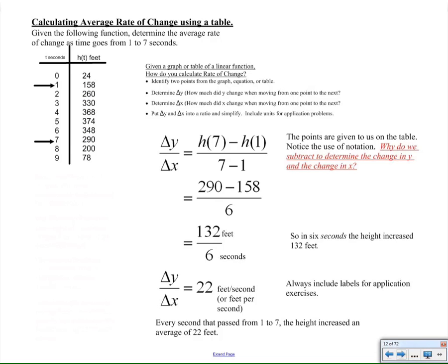So just like what was shown on the previous slide, the first thing we need to do is identify two points from the graph, equation, or table. Here I have two points, one for one second and one for seven seconds. Next thing, determine how much the y has changed, then determine how much the x has changed, and then put them into a ratio and simplify.